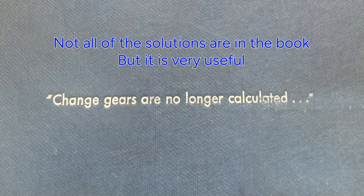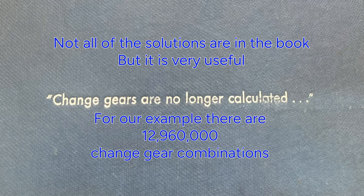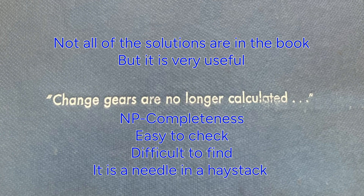Change gear calculations can certainly be done easily with a home computer these days or even on your phone, but it's actually a very difficult problem to solve analytically. You write a nested do-loop, run through all the change gears one at a time, and check against your main variable — if it passes, it's a match. That brute force method is relatively easy to do in less than a minute, but there's no direct function to solve it. There are over 12 million combinations to check, and you don't know which combinations match your ratio. They're very easy to check but hard to find — that's a quality of NP-completeness.